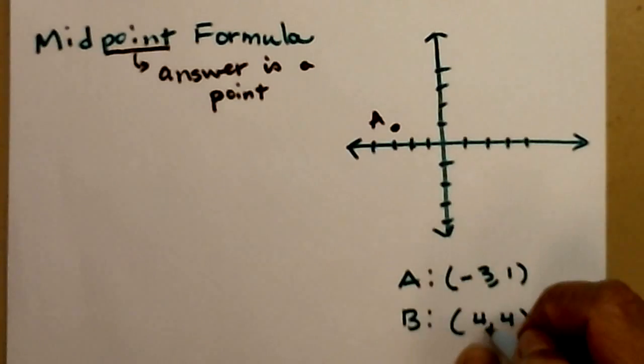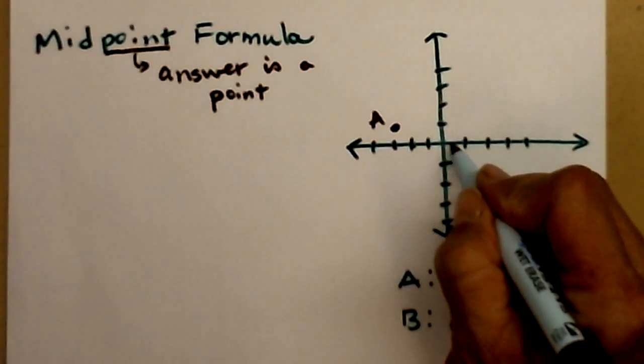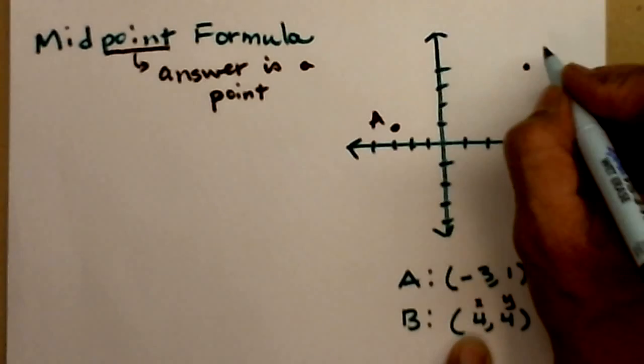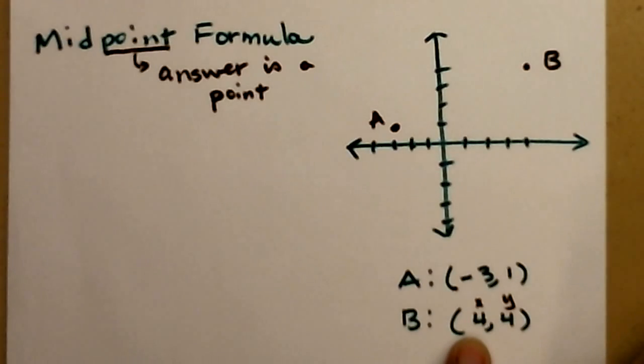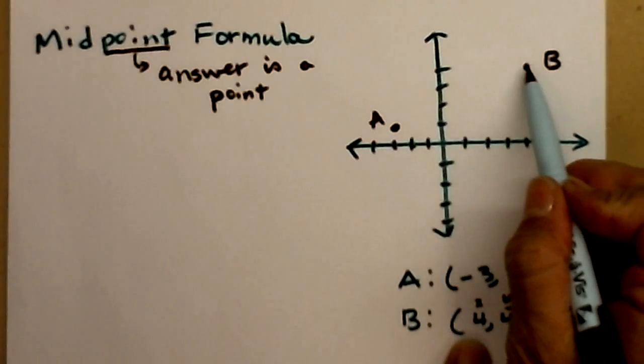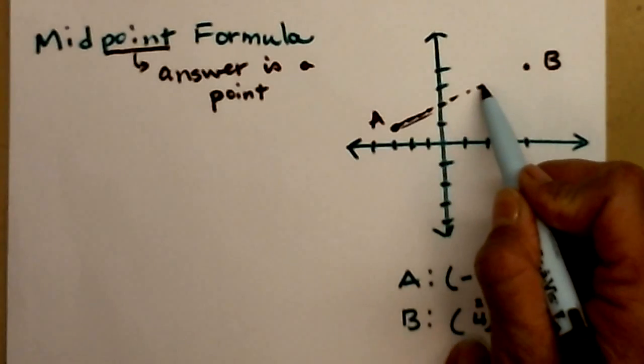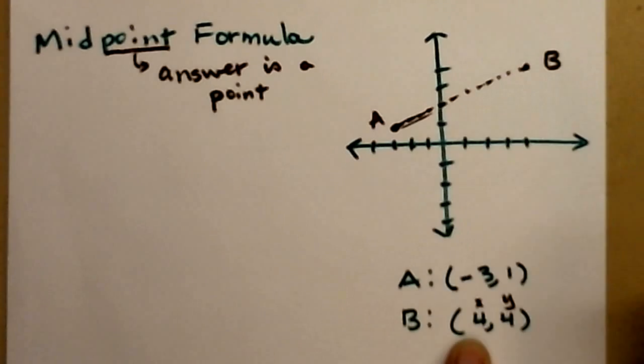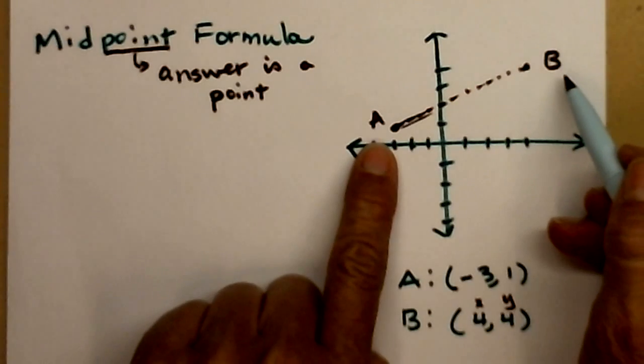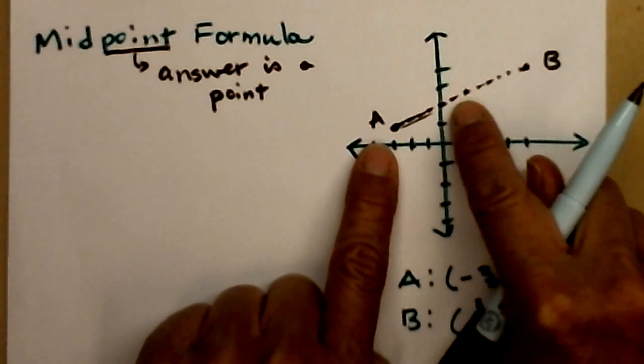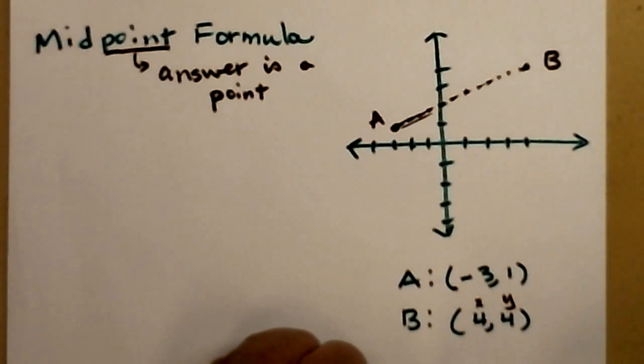And then we'll plot point b, which is at 4, 4. Remember, it's x first, then y. So we're going to walk out 4 in the positive x direction. Up 4 for the positive y direction. And there's point b. And we're trying to find the place halfway between a and b. So if you made a line segment a, b, we're going to be looking for the point in the middle. So if you go ahead and plot your points, you can see if the answer we get is reasonable. I'm going to guess it's somewhere in quadrant 1 when we get our answer.